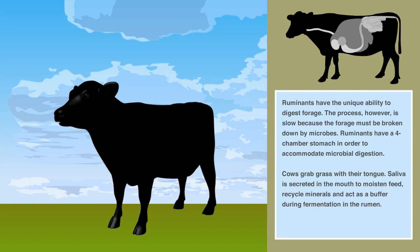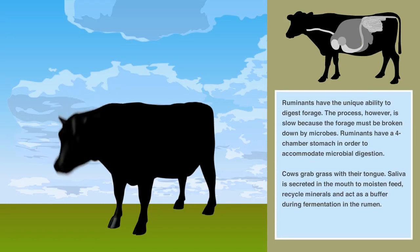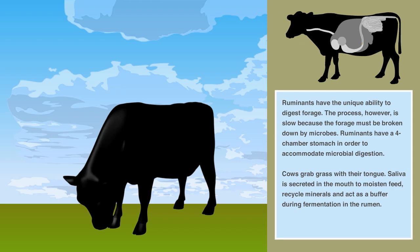Ruminants have the unique ability to digest forage. The process, however, is slow because the forage must be broken down by microbes. Ruminants have a four-chamber stomach in order to accommodate microbial digestion.